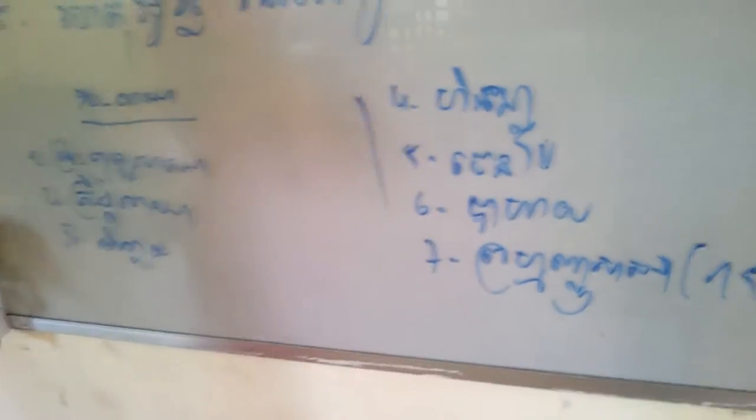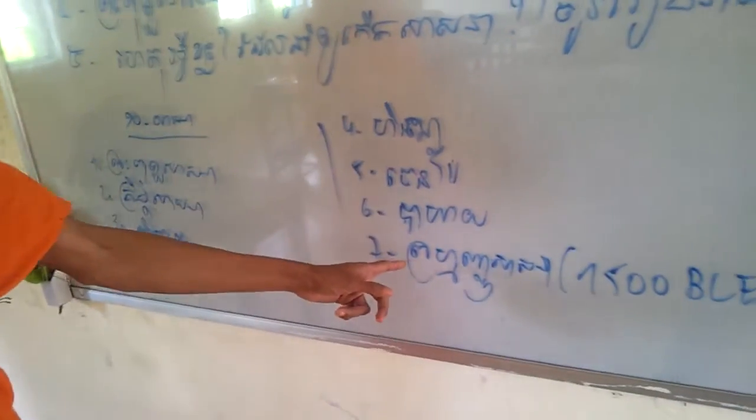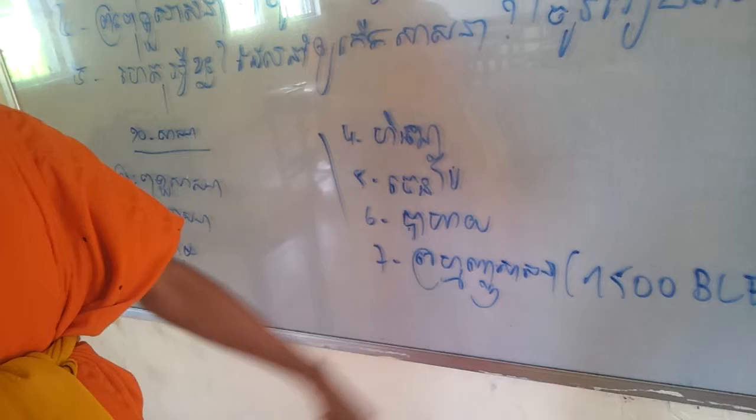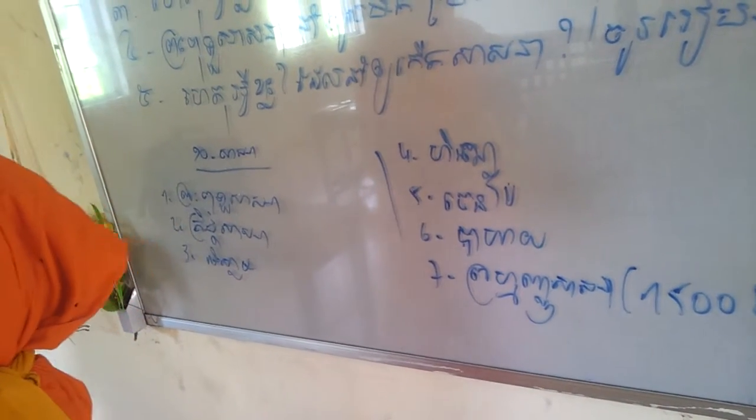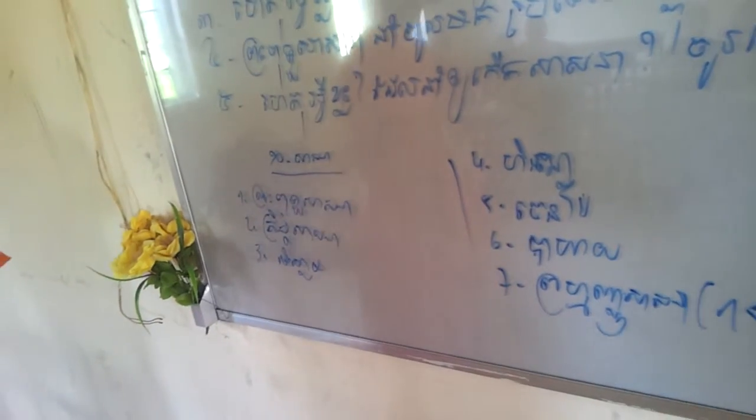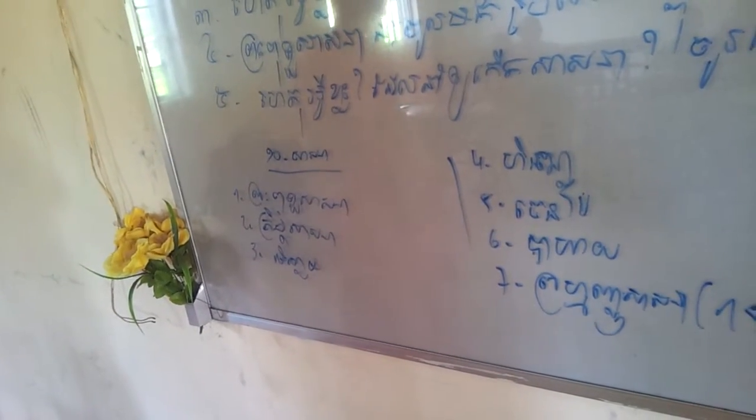And number seven? Number seven, what is number seven? Brummanism. Where is this religion from? From all the world, all in the world believe this.